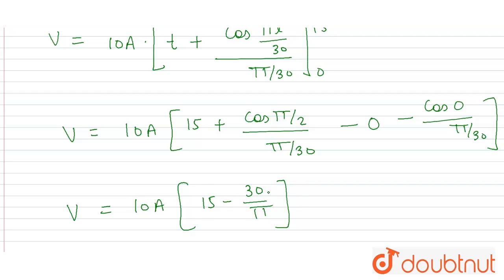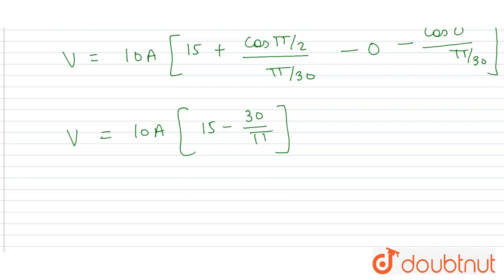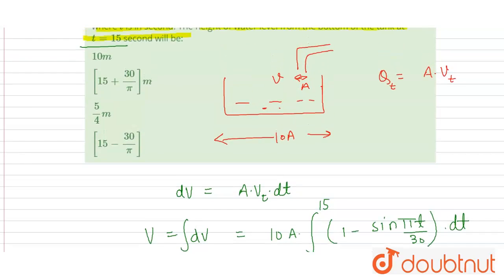So the height h will become height h will come out volume divided by area. Area is 10A, and it will come out 15 minus 30 divided by pi. 10A to 10A will cancel out. This is the value of height, so the correct option will be fourth one. Thank you.